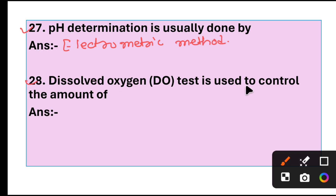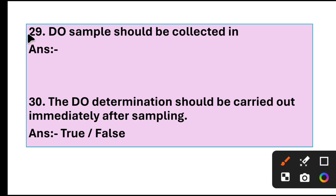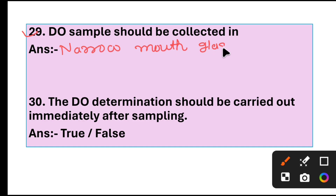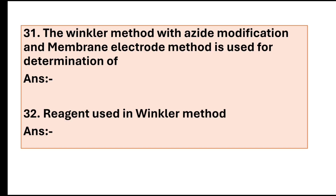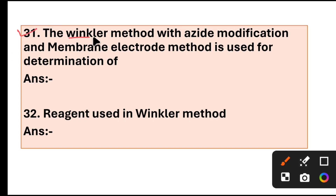Question 28: Dissolved oxygen test is used to control the amount of oxygen. Question 29: DO sample should be collected in narrow mouth glass or BOD bottle. Question 30: The dissolved oxygen determination should be carried out immediately after sampling. Answer: True. Question 31: The Winkler method with azide modification and membrane electrode method is used for determination of dissolved oxygen.